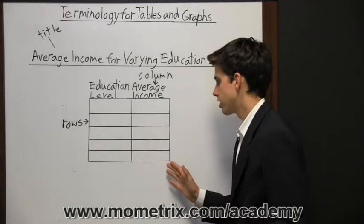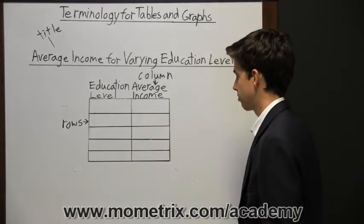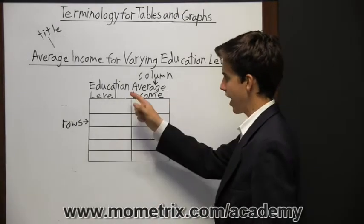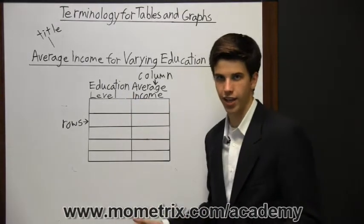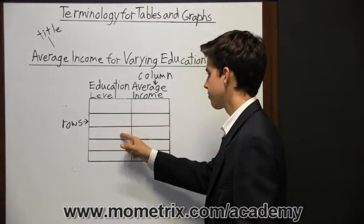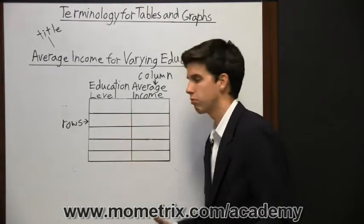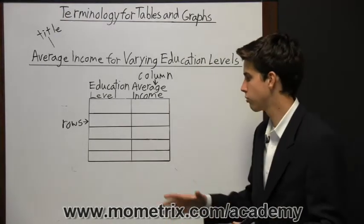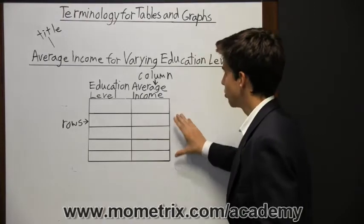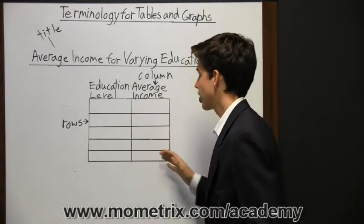Right here we have two columns, and those columns have to have labels. We have education level and average income. Here we would have varying education levels like no high school diploma, high school diploma, bachelor's degree, master's degree, doctorate, as well as associate's programs, whatever you want to put in there. Then you would have the average income to accompany each type of education level.